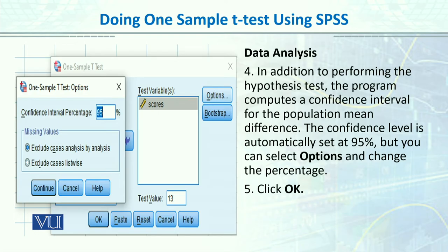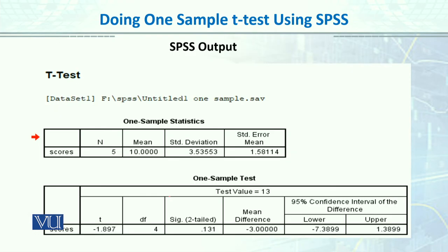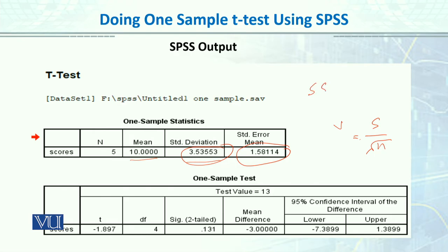Jab aap OK button hit karenge, to yeh aapko output file kholke dega. Is output file ki interpretation jo hai, that is important. Sabse pehle woh aapko descriptives deta hai — humaari 5 values ka mean 10 hai, standard deviation 3.53 hai, aur uska standard error of mean. Remember ki humne usko s over root n karke calculate kiya tha. But you should understand what this standard error is and what this standard deviation is — s over root n, with N minus 1. Yeh wahi value hai.